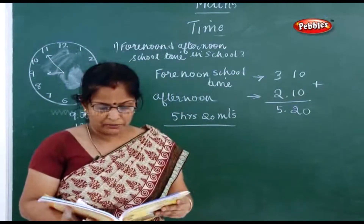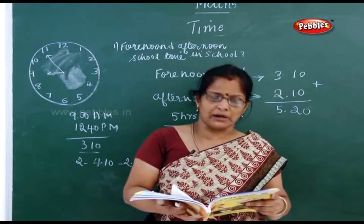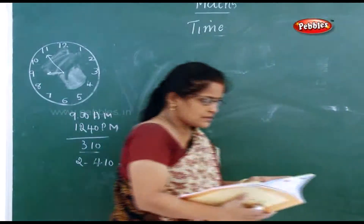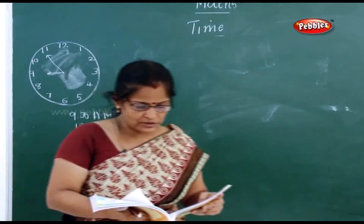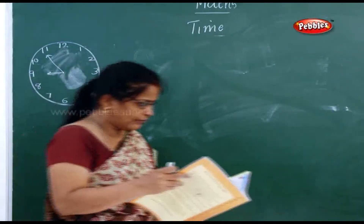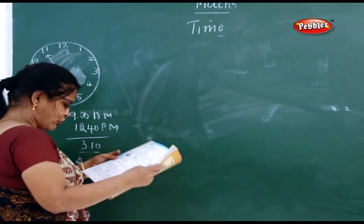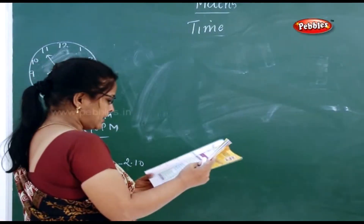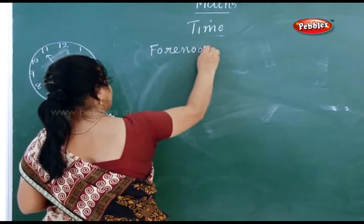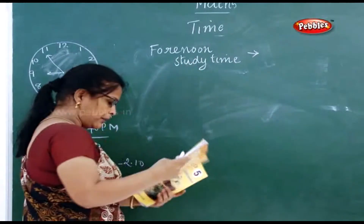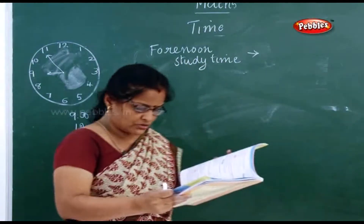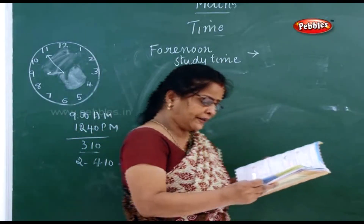Next question: find the time taken by Joseph to complete his homework and study at home. So you have to take the forenoon study time. What is the forenoon study time? It is already given in the schedule — just look into your schedule. It is 1 hour and 30 minutes.